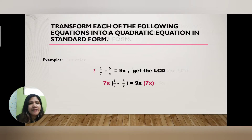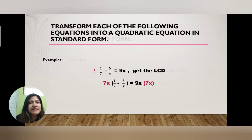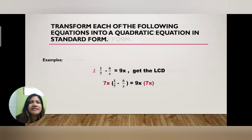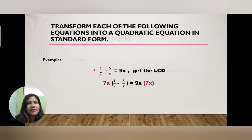Next, we multiply 7x on both sides — on the left side and on the right side. On the left side: 7x times the quantity (1/7 − 6/x). Focus on 1/7 first: 7x times 1/7 — the sevens cancel, leaving x times 1, which is x. So the first term is x.